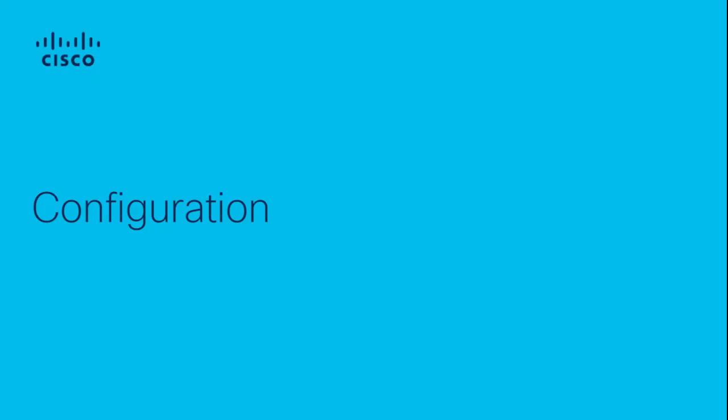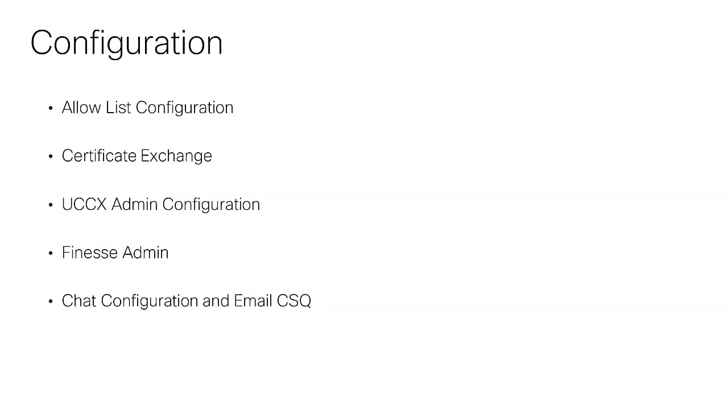Now that the download is done, we can proceed with the configuration and integration with UCCX. In this section, I'll cover some essential steps which must be implemented in specific places: the allow list, the certificate exchange, the configuration in the UCCX administration, some changes in the layout in the Finesse administration, and basic knowledge to create chat and email CSQs.